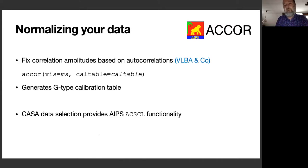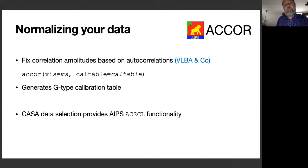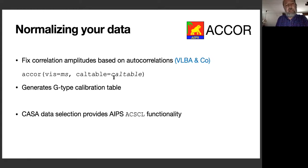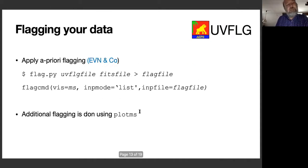For VLBA data, you need to normalize amplitudes based on the autocorrelations using the accor task, which creates a G-type calibration table to apply in subsequent tasks. This does what the ACCOR task in AIPS does, but in CASA you can select which spectral windows and channels to use for the correction. It replicates most of the functionality of ACSCL in AIPS, which is a relatively newer task that accounts for bandpass shapes.